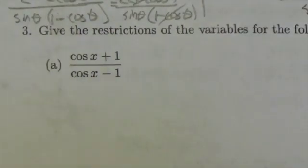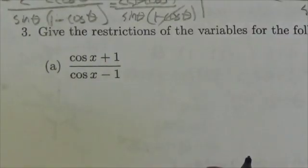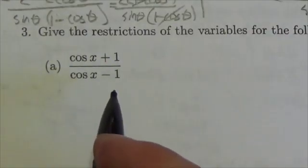We're supposed to state the restrictions of the variables for the following expressions. So we're looking at cosine of x plus 1 over the cosine of x minus 1.